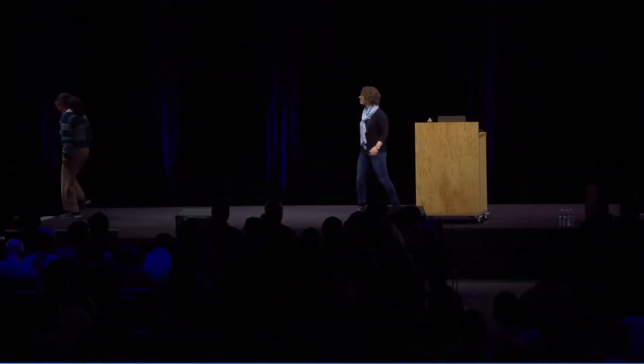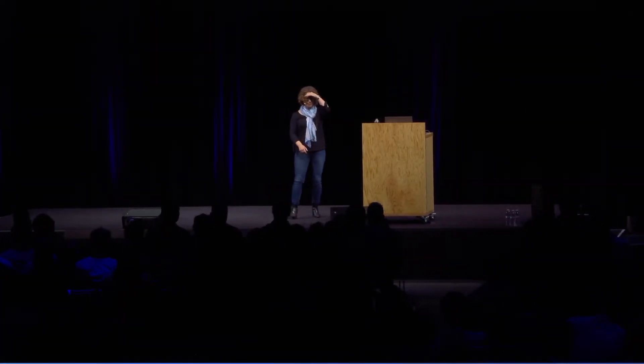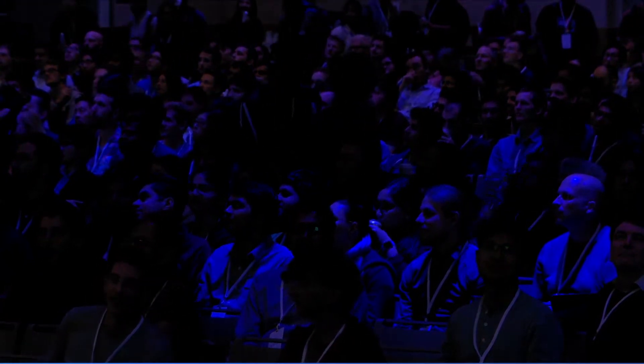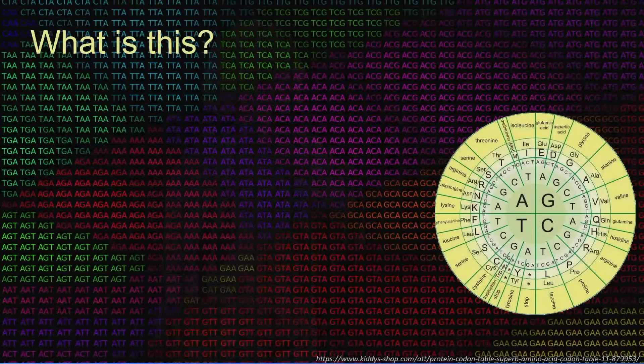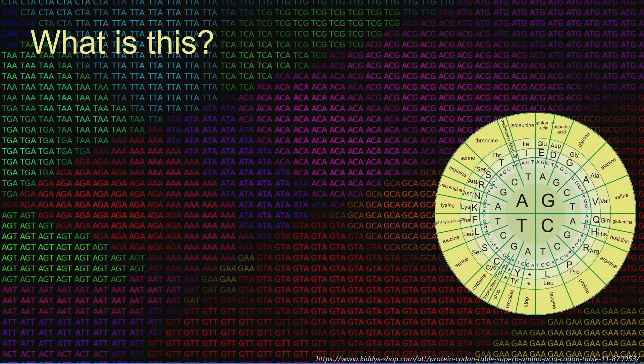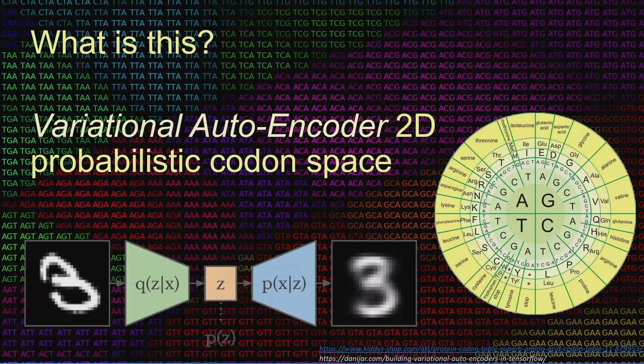So first of all, I can't really see, but how many people here know what the letters are — these triplets of letters — just to gauge my audience? And who knows what the picture is of? So I'll give you a little bit of a hint. The triplets of DNA are codons, each of which encodes an amino acid, which is of course the building block of proteins. So what is this thing? This is actually a two-dimensional variational autoencoder probabilistic embedding.